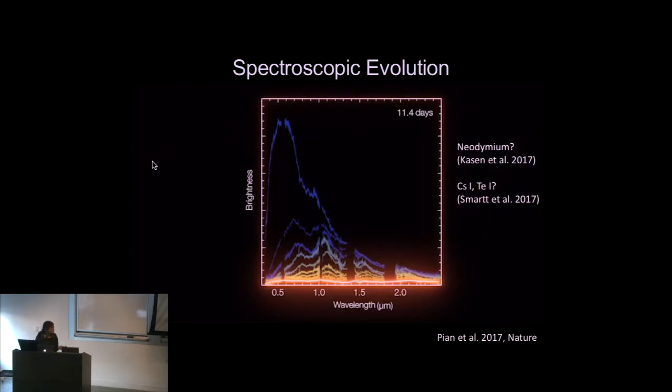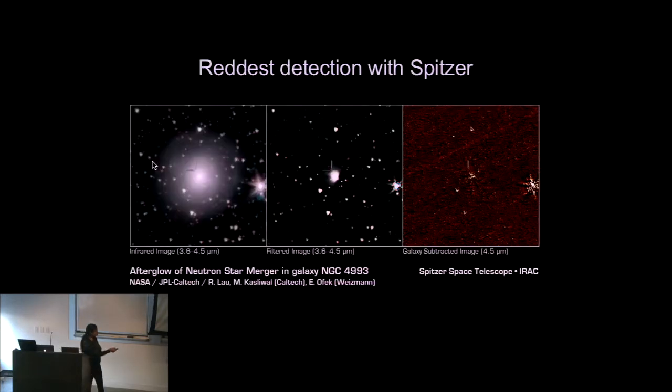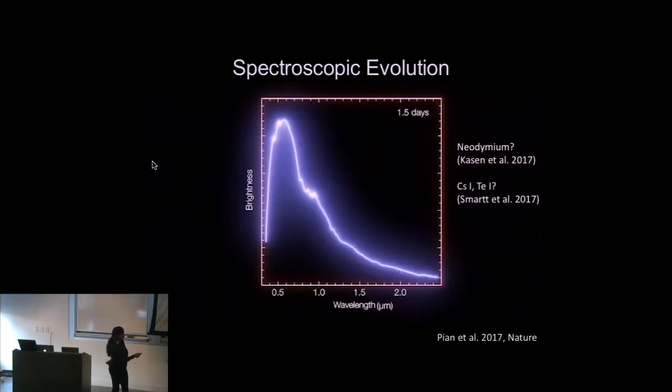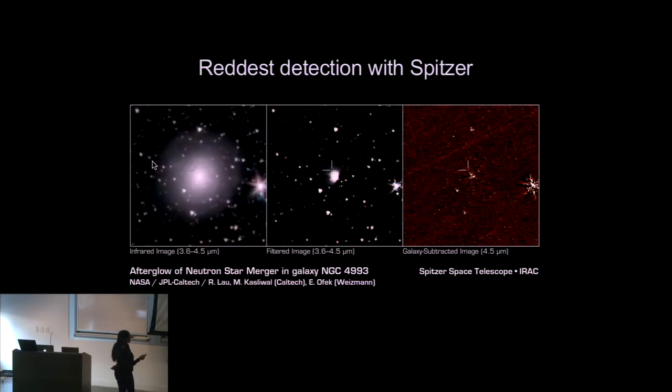And these spectra here cover half micron to about two and a half micron. Just recently, about 43 days after merger, the Spitzer Space Telescope has continued to detect this event in the IRAC channel, which is 4.5 micron. It's a very weak detection, but a secure detection at 4.5 micron of a very faint, very red event at that late phase.